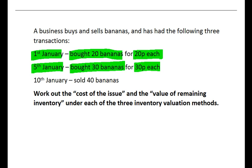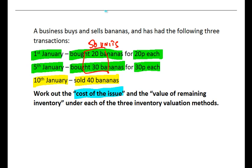At that point we've bought two lots of bananas — 20 and 30 — so we've actually got 50 units of inventory. We then on the 10th of January sell 40 of them, which is sometimes referred to as an issue of inventory — bananas coming out of the storeroom being sold to hungry customers. If we had 50 bananas and sold 40, we'll have 10 left. The more important question is what the cost of the issue will be.